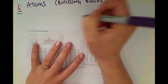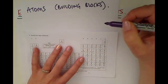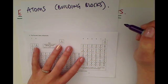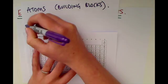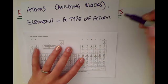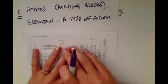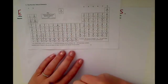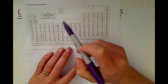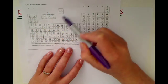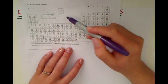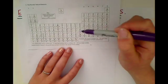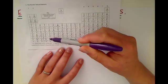There are over a hundred different types of atoms, and a type of atom is called an element. All of the different elements are organised together in the periodic table. The smallest atom and therefore the smallest element is hydrogen, but you can see there are loads of other different types of atoms and therefore loads of other different elements.